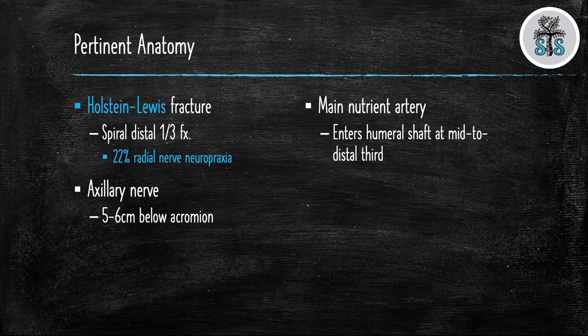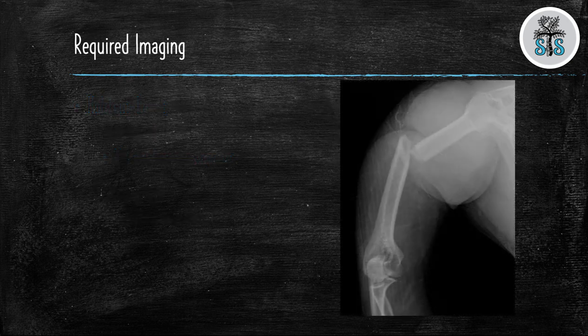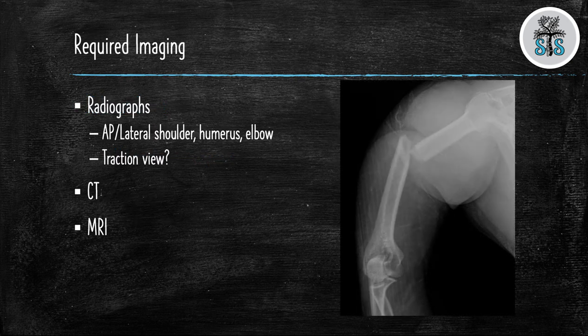Radiographs of the entire humerus should be obtained. You should include the shoulder and elbow. If you want to further characterize the fracture you can perform a traction view. Like always you can obtain a CT scan to further characterize the fracture. MRIs are reserved for pathologic fractures or fractures with malignant characteristics.